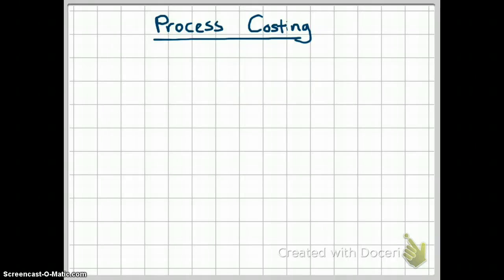Chapter 5 takes a look at process costing. In this chapter we are going to calculate the product cost using process costing. In Chapter 3 we looked at job costing, and now we are going to take a look at process costing.